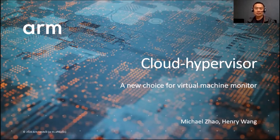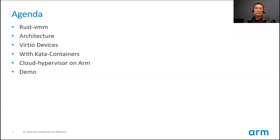Cloud Hypervisor is an open source project started by Intel. It is implemented in Rust language and is based on the RustVMM project. In the first half of this presentation, I will introduce the development of Rust-based virtual machine monitors and RustVMM, the architecture of Cloud Hypervisor, the virtual I/O devices, and how it works with Kata containers.